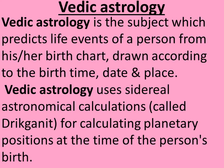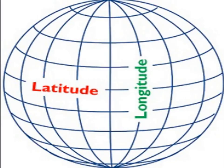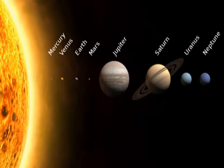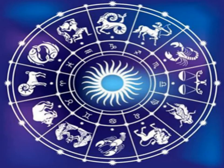We calculate the planetary positions at the time of the person's birth by taking the latitude and longitude of planet Earth. We try to find where all the planets are situated from that particular point of longitude and latitude, and try to fix these particular planets in the 12 houses.